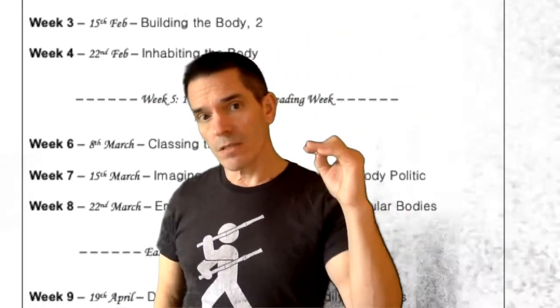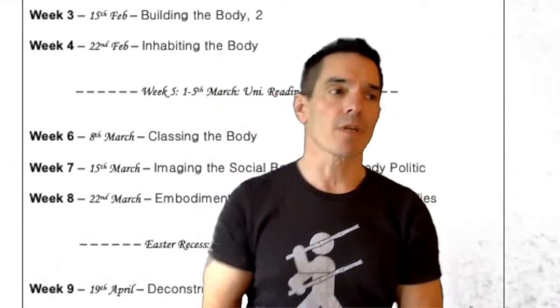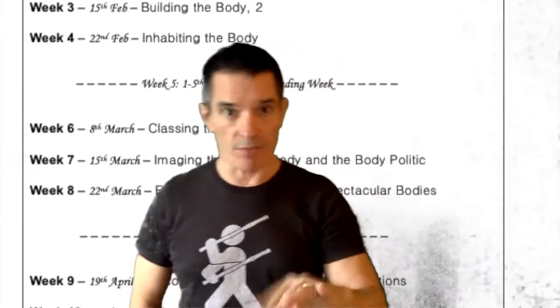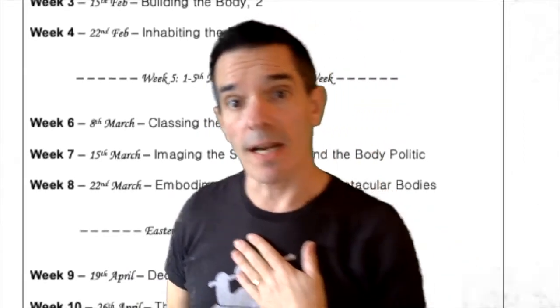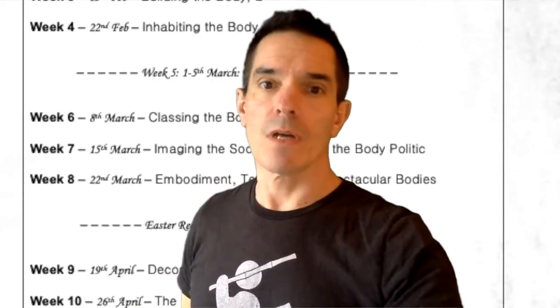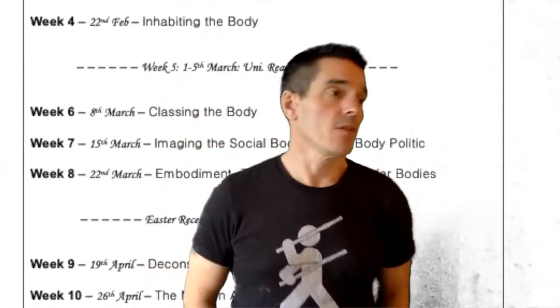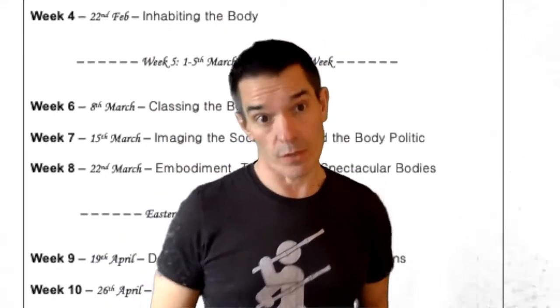Week eight is called Embodiment, Technique and Spectacular Bodies. It's about being in the body, representing the body, skills, techniques, masculinity, femininity, gender, and so on. These themes have been present from the start — masculinity, femininity, gender, sexuality, ethnicity and class — but this week we'll be looking at them more directly. Then we've got the Easter recess: three weeks of Easter holidays where you will be able to work, or not, depending on how you structure your time. You take some responsibility for your involvement in the module.